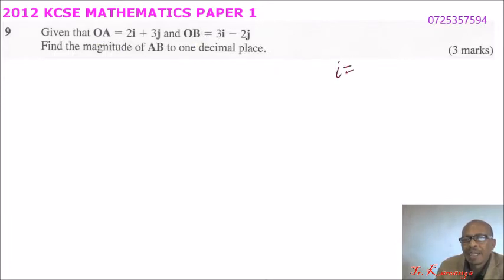I am going to use the long method, so that you can understand how we arrive to the answer. i is the same as the position vector (1, 0), j equals (0, 1). So these are the vectors represented by i and j, unit vectors.